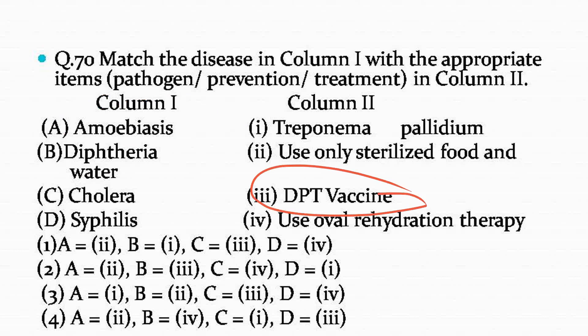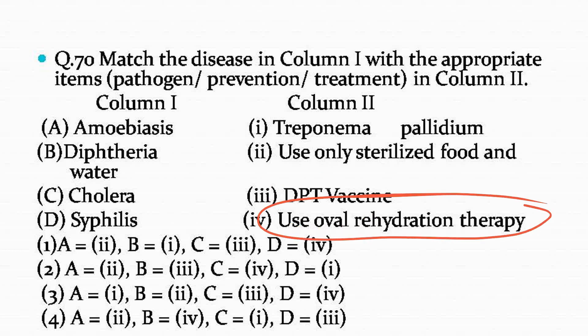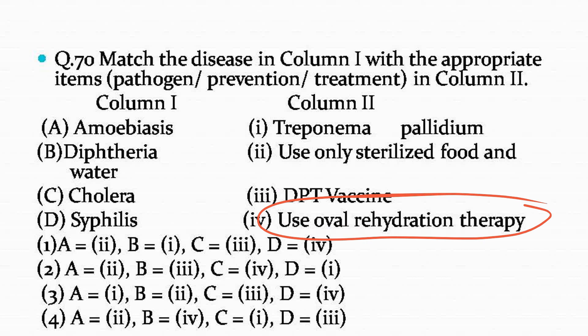Remember the full form of DPT: D stands for diphtheria, P stands for pertussis, and T stands for tetanus. Cholera symptoms are dehydration and diarrhea, so they are treated with oral rehydration therapy. Syphilis, as you know, is a sexually transmitted disease and its causative organism is Treponema pallidum. Hence the right answer is option number two.